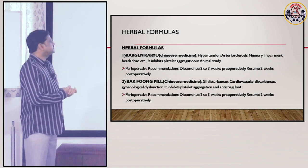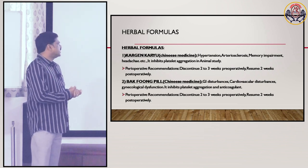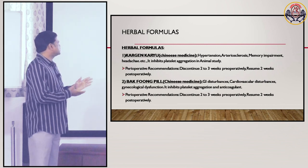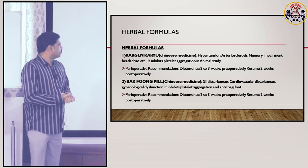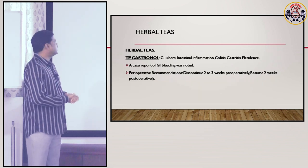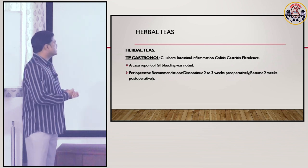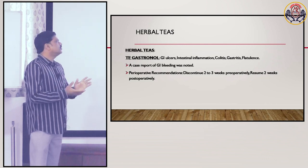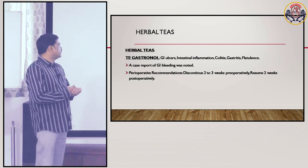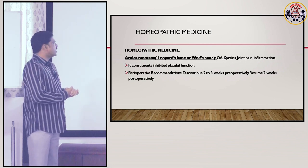Bao He Wan pill (Chinese medicine): used for GI disturbances, cardiovascular disturbances, and gynecological dysfunction. It inhibits platelet aggregation and has anticoagulant properties. Perioperative recommendations: discontinue 2 to 3 weeks preoperatively and resume 2 weeks postoperatively. Herbal teas — tea (gastronol): used for GI ulcers, intestinal inflammation, colitis, gastritis, and flatulence. A case report of GI bleeding was noted. Perioperative recommendations: discontinue 2 to 3 weeks preoperatively and resume 2 weeks postoperatively.